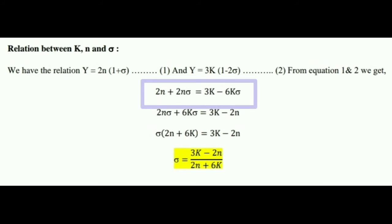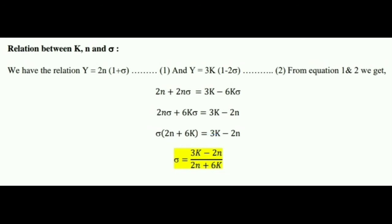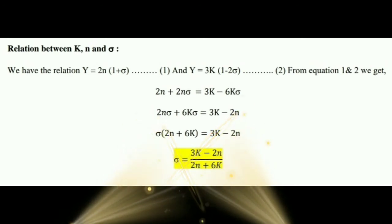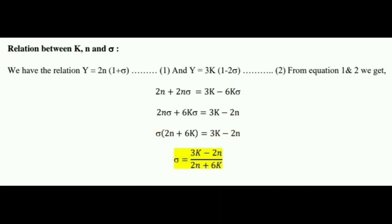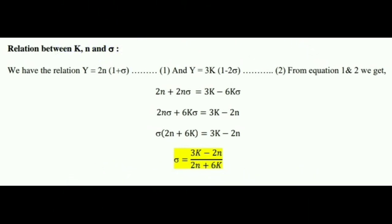Solving and rearranging the equation, we get the final result: σ = (3k − 2n) / (2n + 6k). This is the relation between bulk modulus, rigidity modulus, and Poisson's ratio. In the semester exam, both relations may come for 6 or 8 marks, so this is an important topic — don't neglect it.